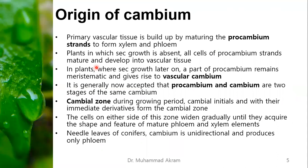Region of the cambium. We must understand which tissues produce the cambium and the vascular cambium activity. Primary vascular tissue is built up by the maturing pro cambium cells to form xylem and phloem. The pro cambium is the initial tissue, the precursor of the vascular cambium. In plants where secondary growth is absent, all cells of the pro cambium mature into vascular tissue. In plants where secondary growth occurs, a part of pro cambium remains meristematic and gives rise to the vascular cambium. It is now accepted that pro cambium and cambium are two stages of the same meristem — pro cambium being the first stage, and cambium the second.